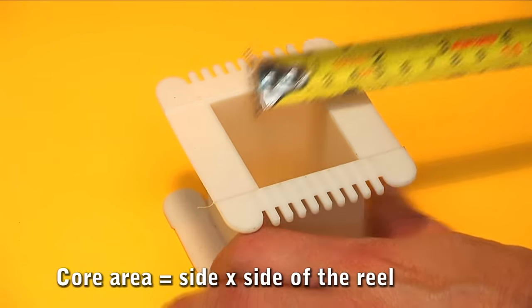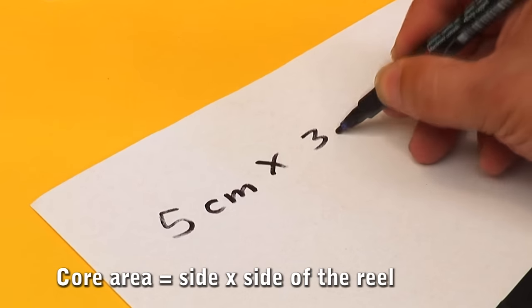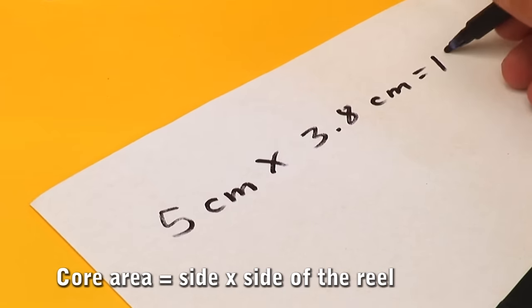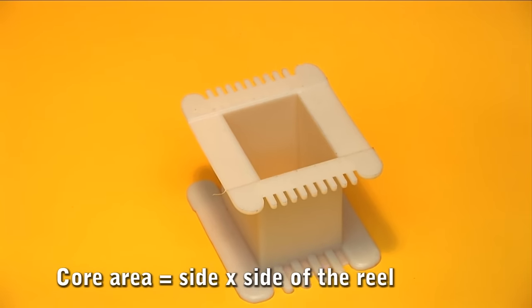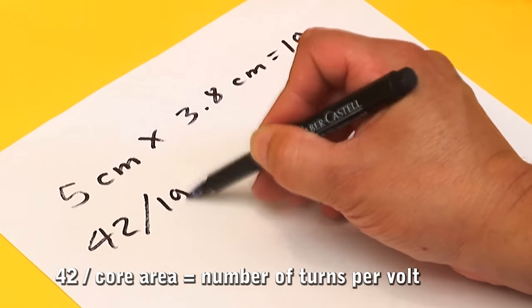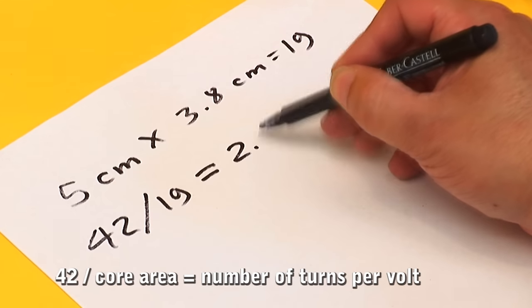In this case we have a formwork of 5 by 3.8 centimeters which gives us a core with an area of 19 square centimeters. We take the constant 42 and divide it by 19 for 2.21 turns per volt.